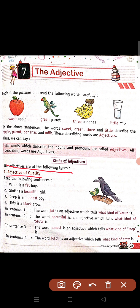Warren is a fat boy. Stuthi is a beautiful girl. Deep is an honest boy. This is a black crow. So in sentence one, the word fat is the adjective — it tells us what kind of person Warren is.